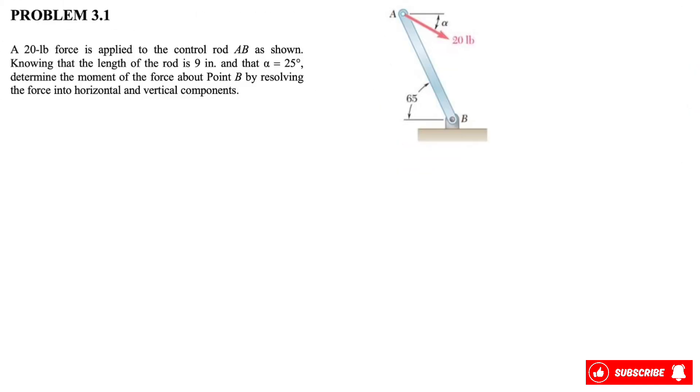Okay, welcome back guys. In today's video we have a question from Chapter 3 of the Beer and Johnston textbook. In this question, we have a 20 pound force that is applied to the control rod AB, and we know that the length of the rod is 9 inches and there is an angle alpha in the question which we know is 25 degrees.